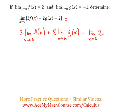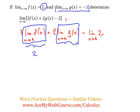How does that help us? Well, I know that the limit as x approaches a of f(x) is just 2, so this whole thing is just 2. Now the limit as x approaches a of g(x) is negative 1, so this whole thing here is just negative 1.